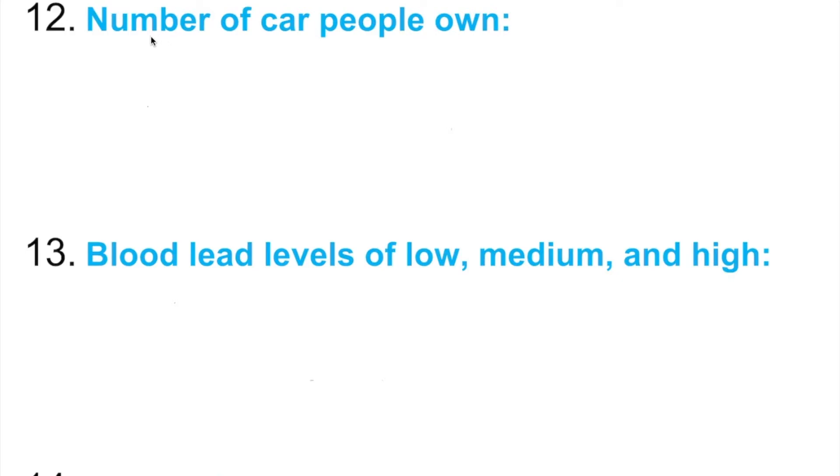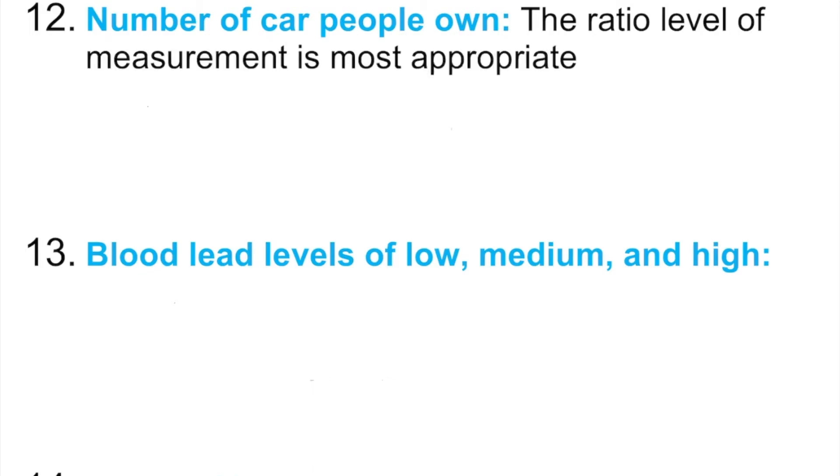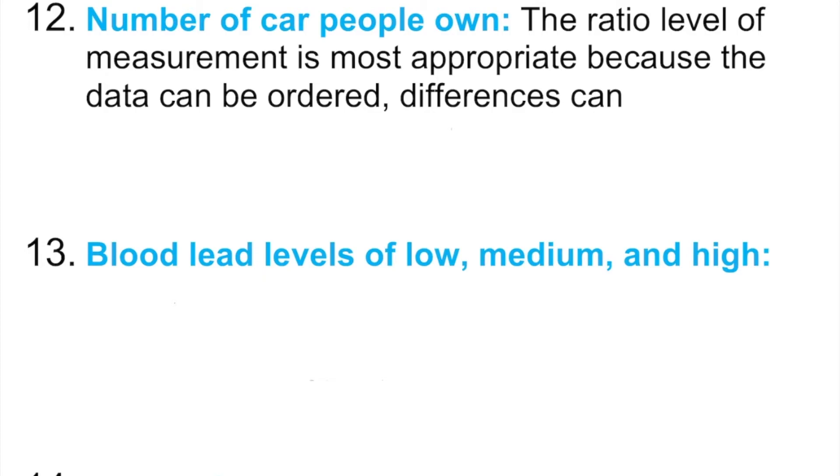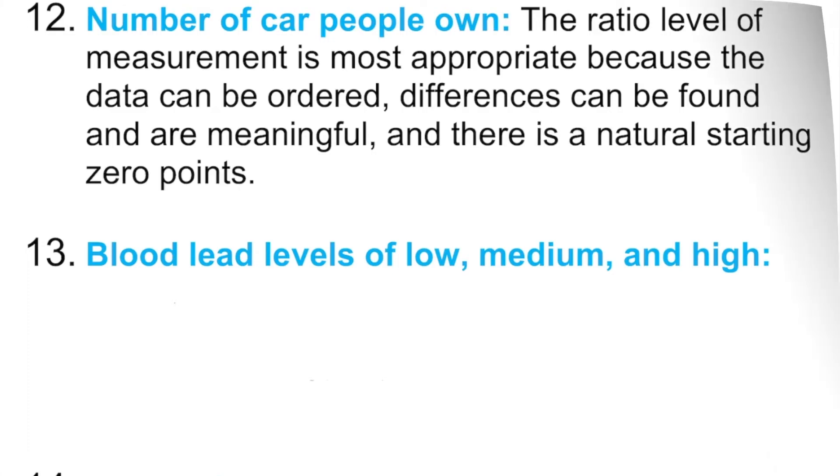So we may see a question like that. Number of cars people own. Well, we are not going to just say it's ratio. We have to say it more in detail, actually. So for example, number of cars people own - we can say the ratio level of measurement is the most appropriate because the data can be ordered, differences can be found and are meaningful, and there is a natural starting point, zero.